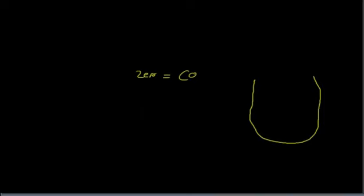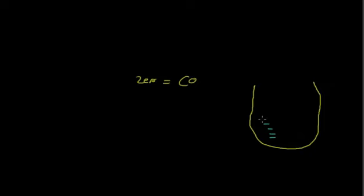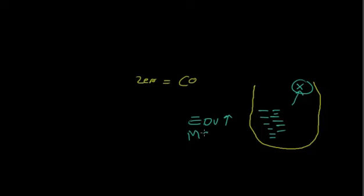We will talk about the cardiac function curve today. First, you need to know: if you have a stopped heart, the cardiac output here is zero. That means the blood volume in the heart will just accumulate, so the end-diastolic volume will be high — because there is no pumping, the blood accumulates. This is the main indicator for mean circulatory filling pressure, which will also be high. Whenever you have more volume in the cavity, the pressure will be high in the heart.